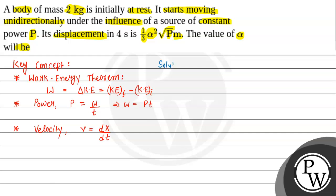So let's move to the solution part. The body starts moving when we apply a certain power on it. We can write: change in kinetic energy equals total work done. Now work done can be written as power multiplied by time.